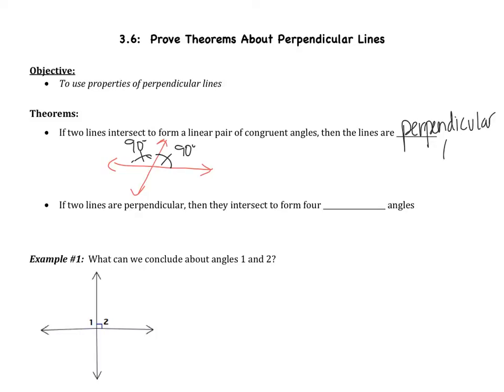You could probably guess that from the section title. Remember that this is the symbol for perpendicular — the upside-down T. The next theorem: if two lines are perpendicular, then they intersect to form four right angles.